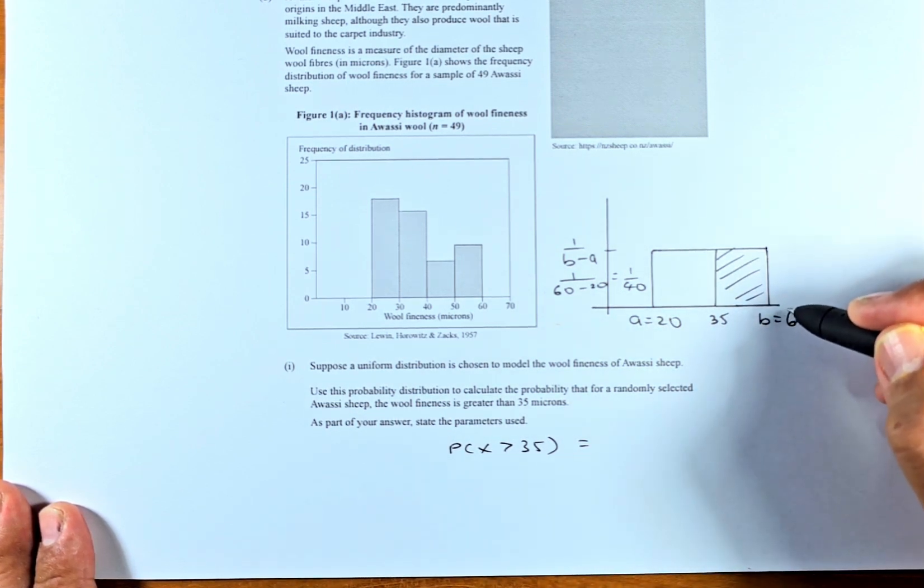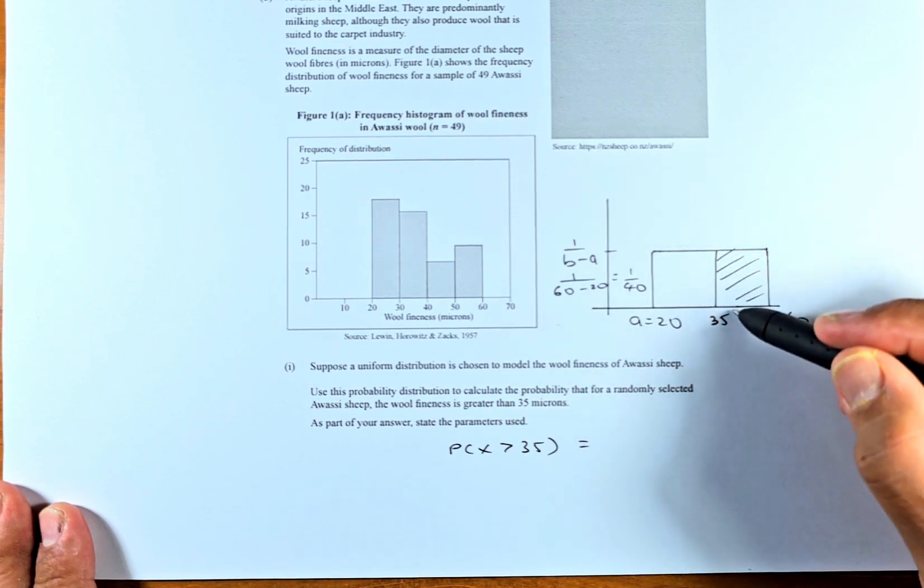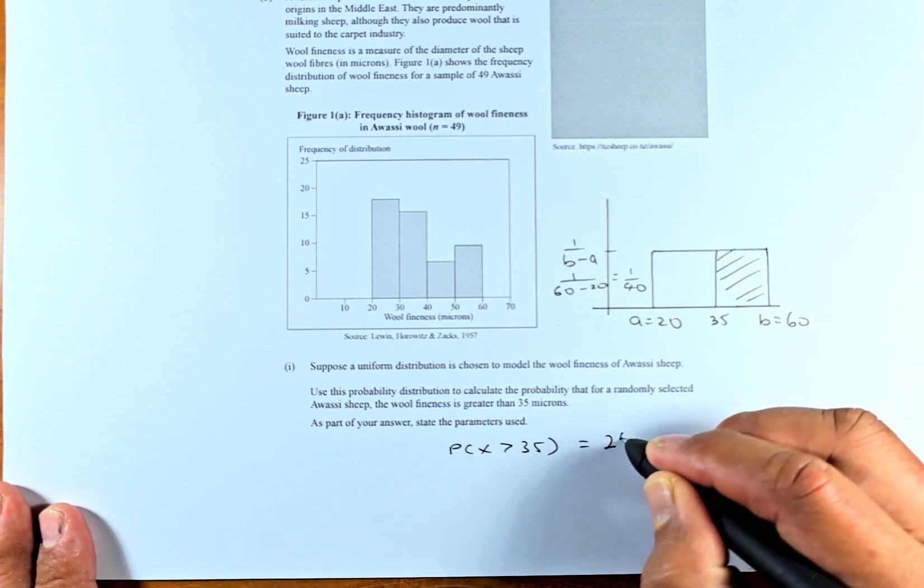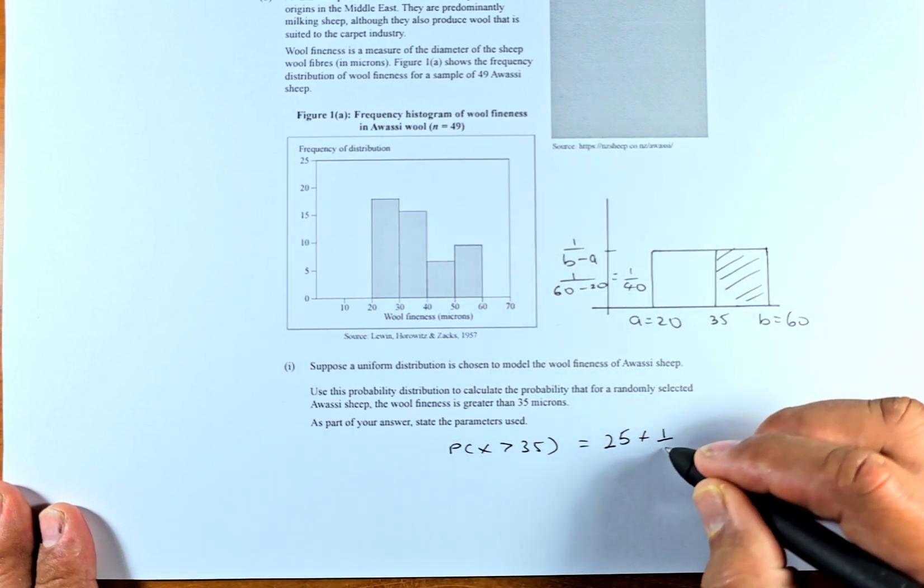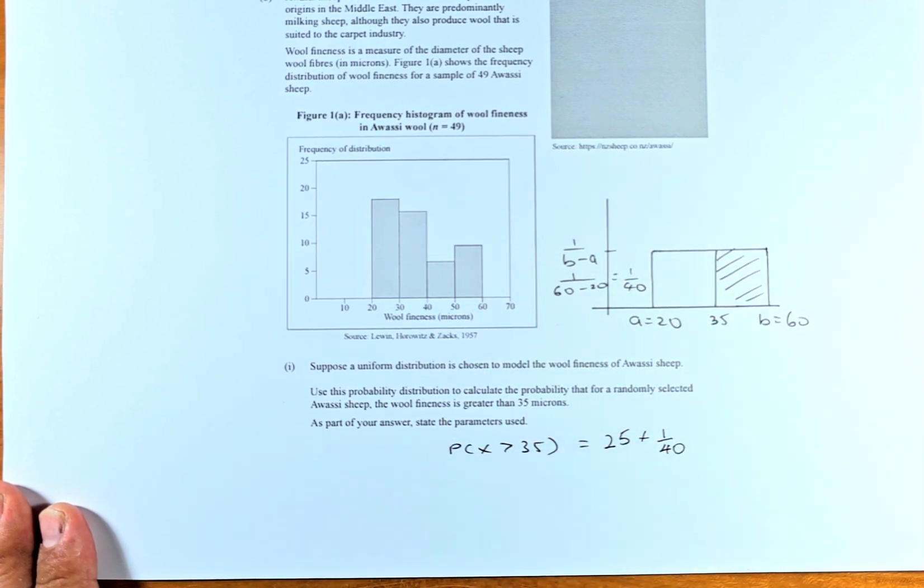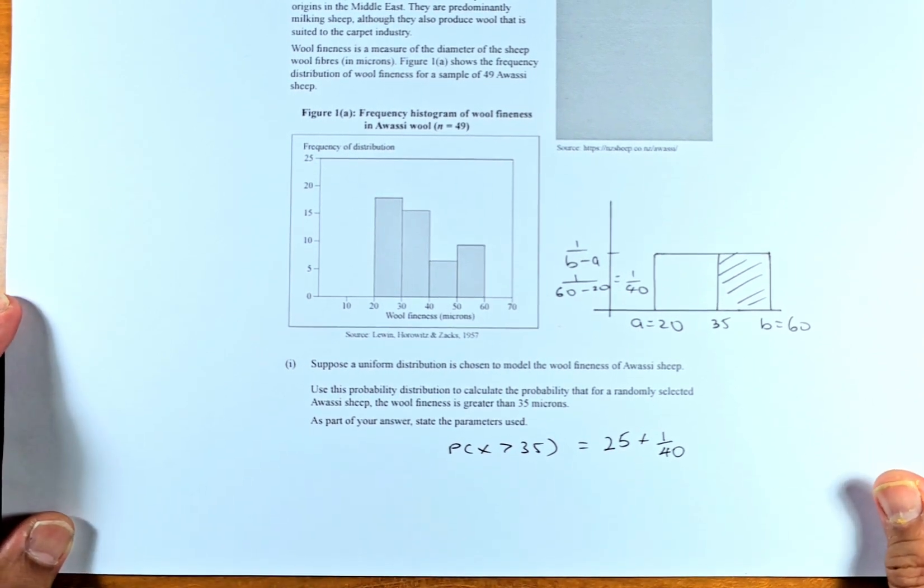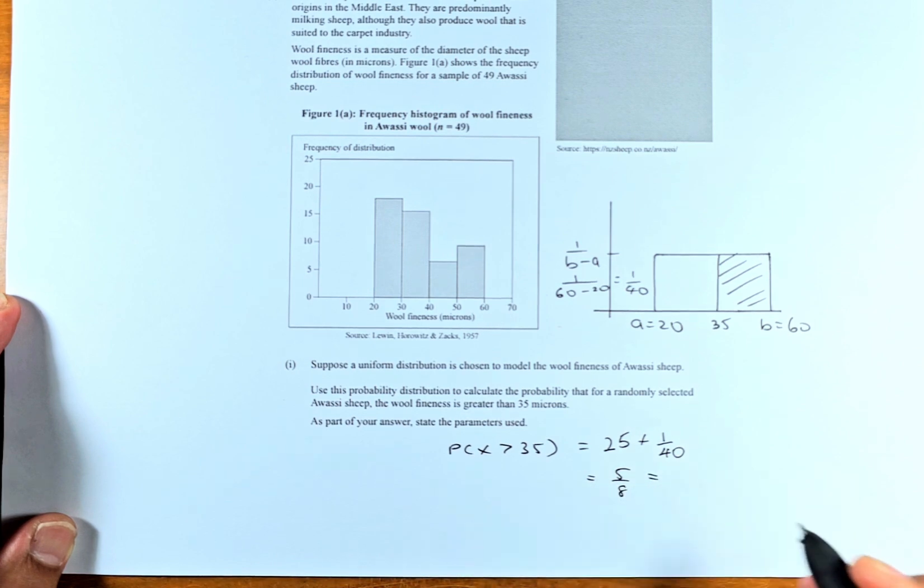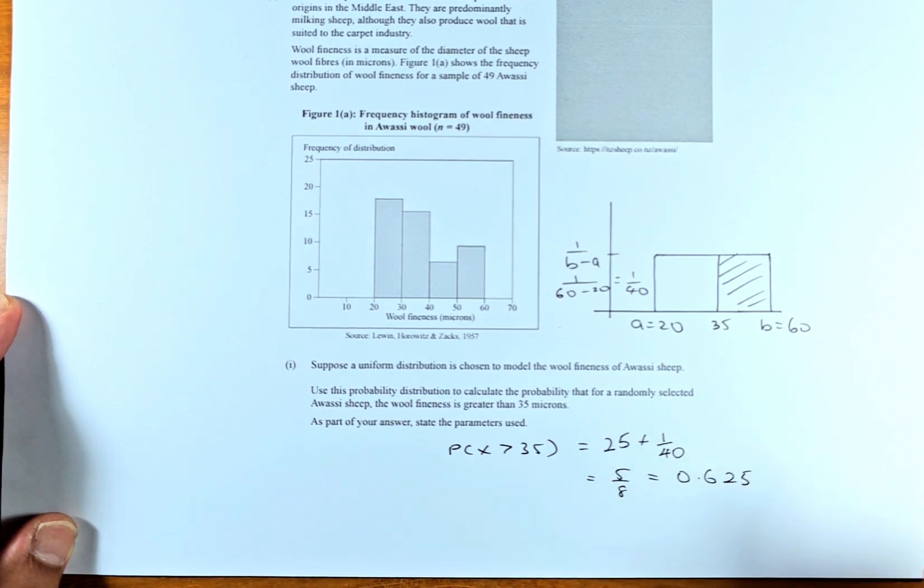Okay, so now to calculate the area from 35 to 60 is very simple. You're going to calculate the length here multiplied by the height. So the length is going to be 60 minus 35, that's 25, and then you're going to multiply by the height. The height is 1 over 40. And then that is just the area. The area is actually the probability under the curve. Now we're going to use the calculator and it's going to be simplified to 5 over 8, or you can put in your decimal: 5 divided by 8, the answer is going to be 0.625.